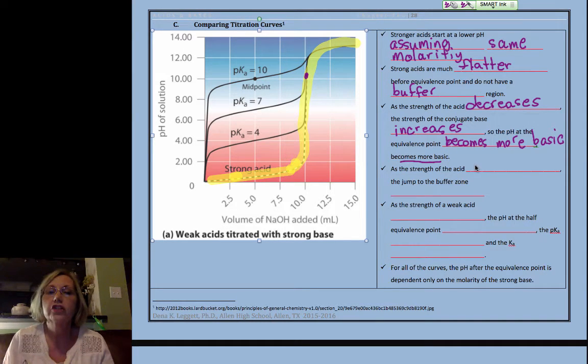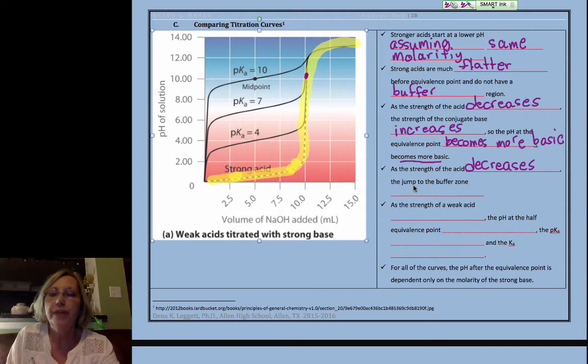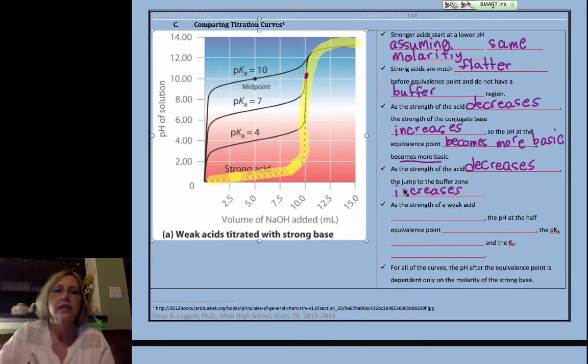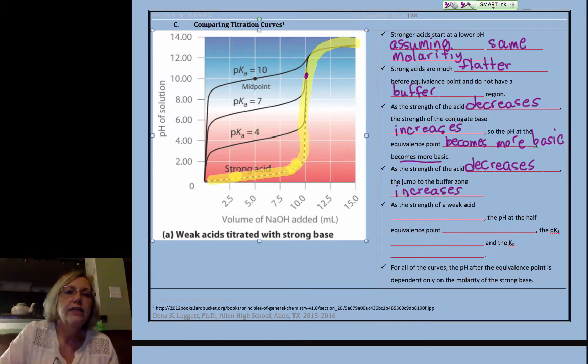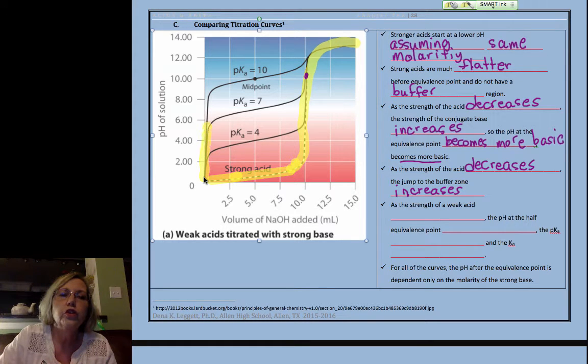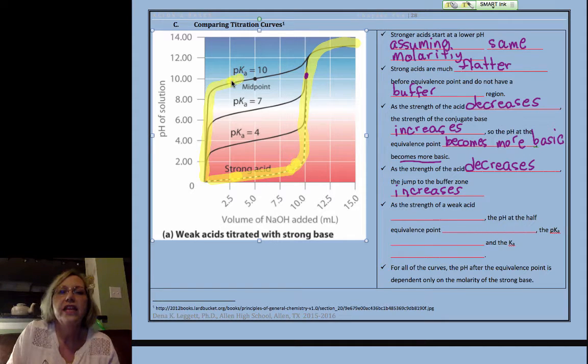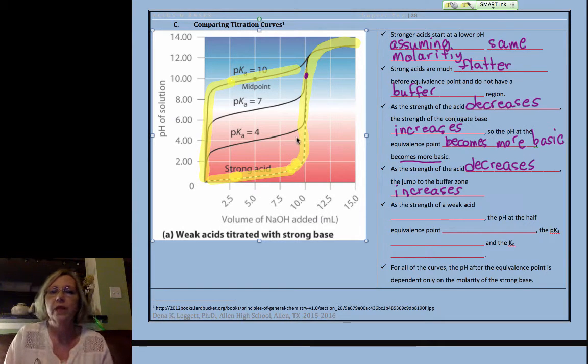As the strength of the acid decreases, there's a bigger jump to the buffer zone. So, if you'll notice on this one here, the weakest has a huge jump until it hits a buffer zone, and then it hits the nice buffer zone.